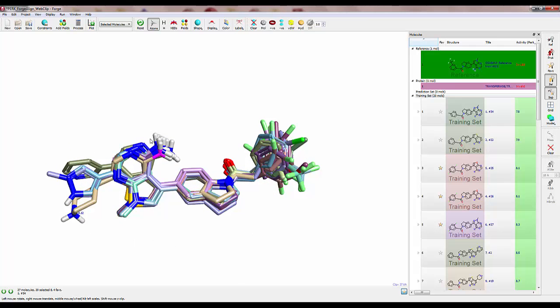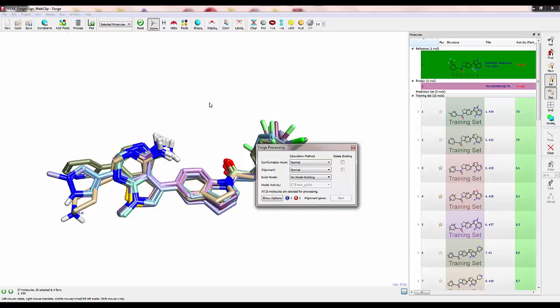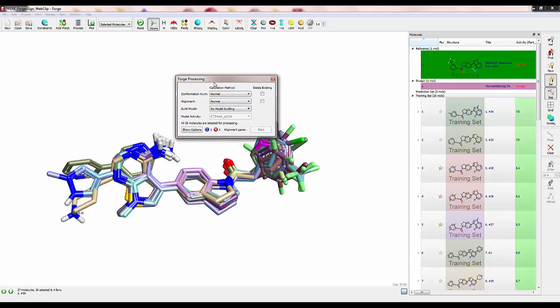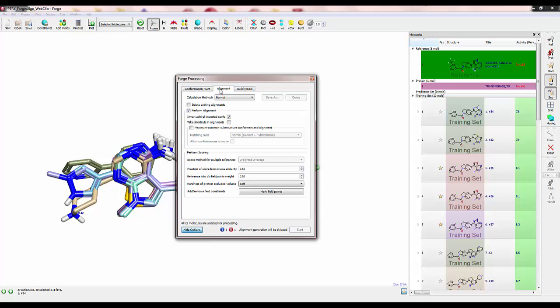To redo the alignment, let's click the button that looks like a calculator in the row of buttons at the top of the FORGE window. In the alignment options, choose to delete existing alignments and toggle off the inversion of achiral conformations, since we know the absolute chirality for these molecules.